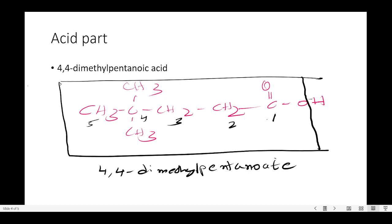Now we look at the acid part. Once again, we do the IUPAC naming of the acid part. The acid is 4,4-dimethylpentanoic acid. The carbon bearing the carboxyl group will get number one, and we number it from right to left.